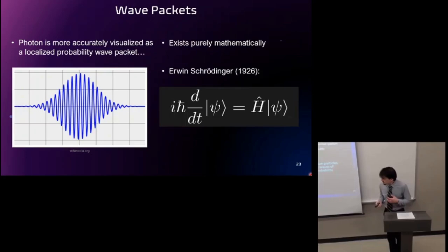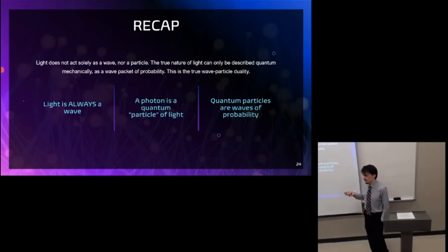So in conclusion, light does not act solely as a wave or a particle, and in fact, it cannot be modeled as either one just by itself, because it can only be modeled at the fundamental level as a wave of probability, these wave packets. And in fact, all things are built like that, and that is all that quantum mechanics is.